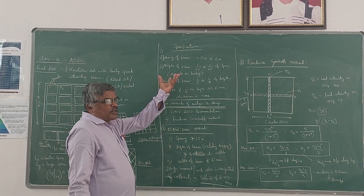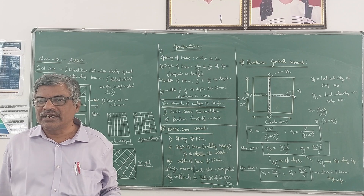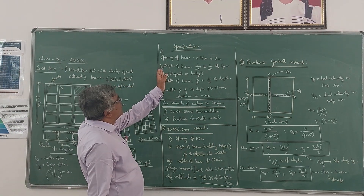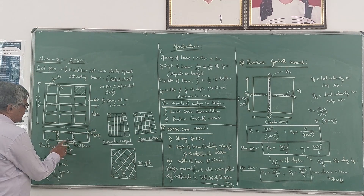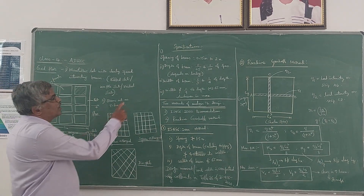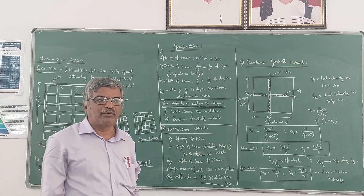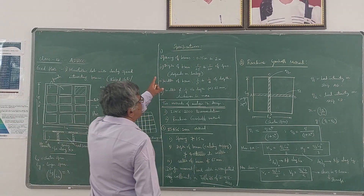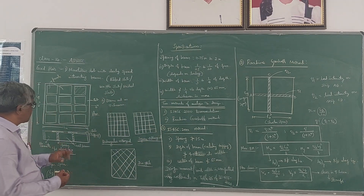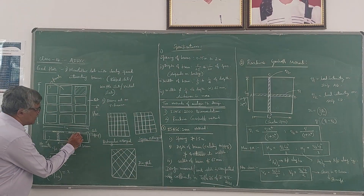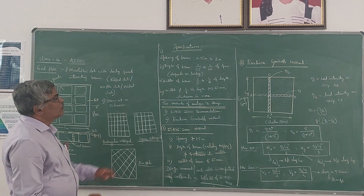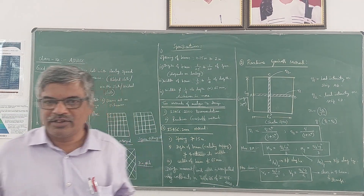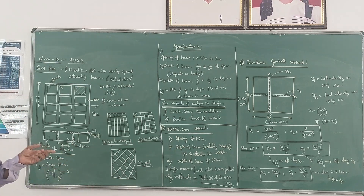There are some specifications to follow for the design of grid floors. First, spacing of the beams is normally kept between 0.75 m and 2 m. Second, depth of the beam is normally taken as 1/20 to 1/25 of the span, where span refers to LX. The depth depends on loading.